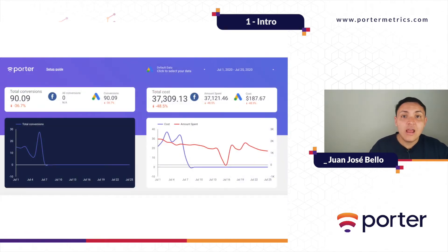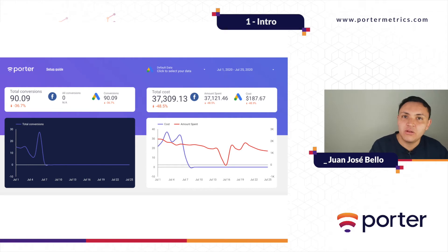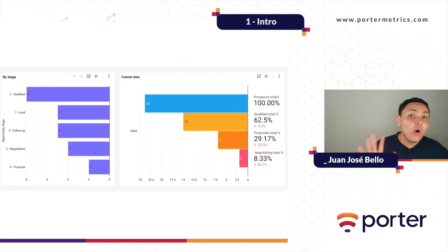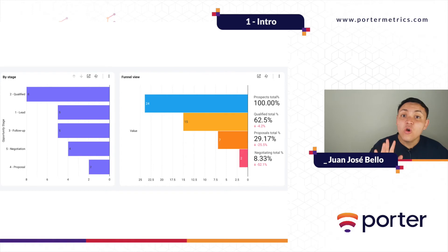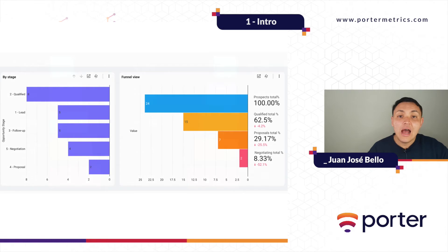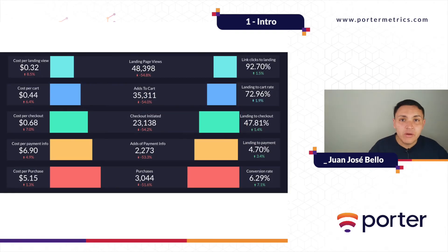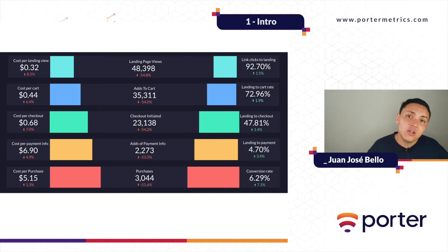Another use case: we can automatically combine our ad spend from Facebook and Google Ads so I can know in total how much I am spending on advertising, or in total how many conversions I am getting from both channels. I can also visualize my funnel from my CRM data — and the quick answer to how you bring CRM data to Data Studio is Google Sheets. If you have data on Google Sheets, you can visualize any data. We will also learn how you can visualize your marketing funnels on Data Studio.